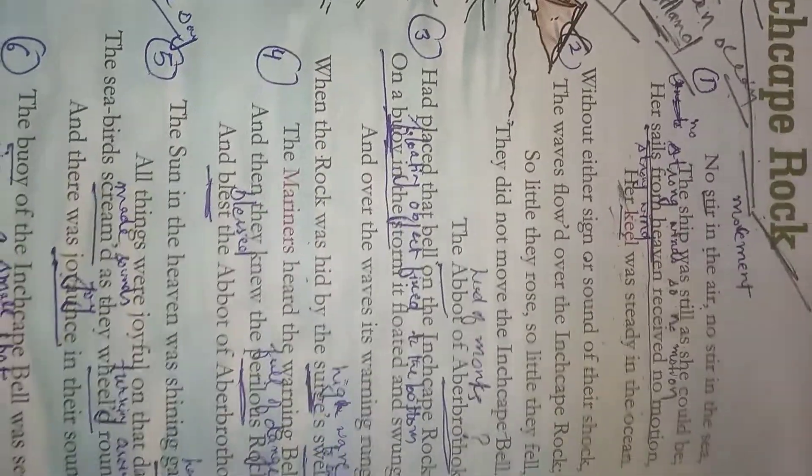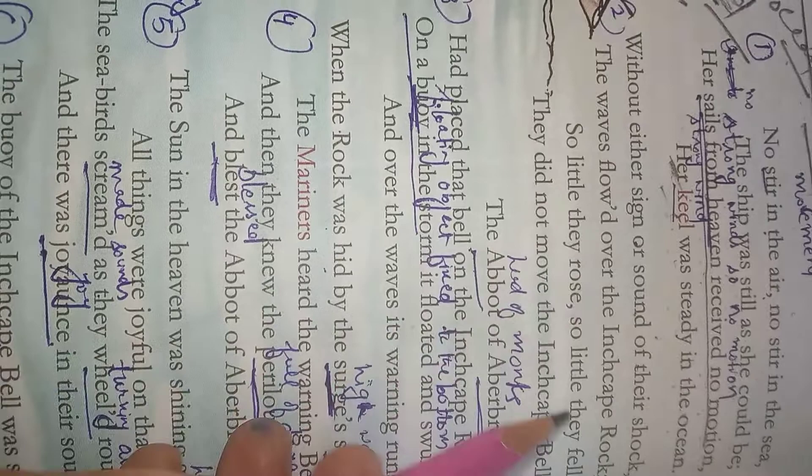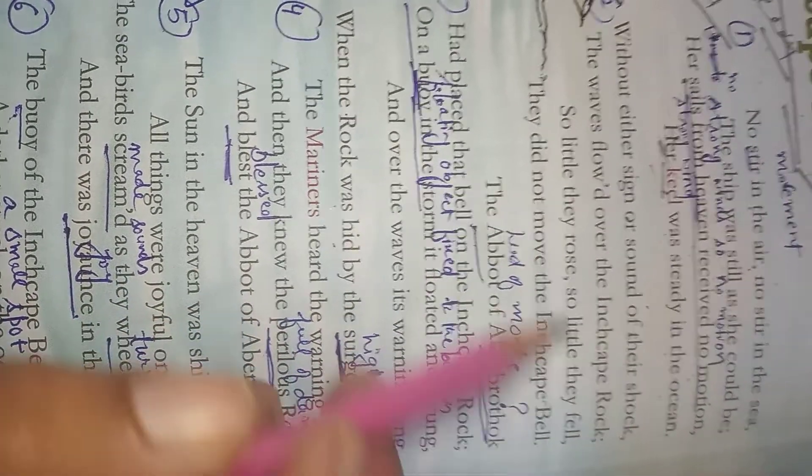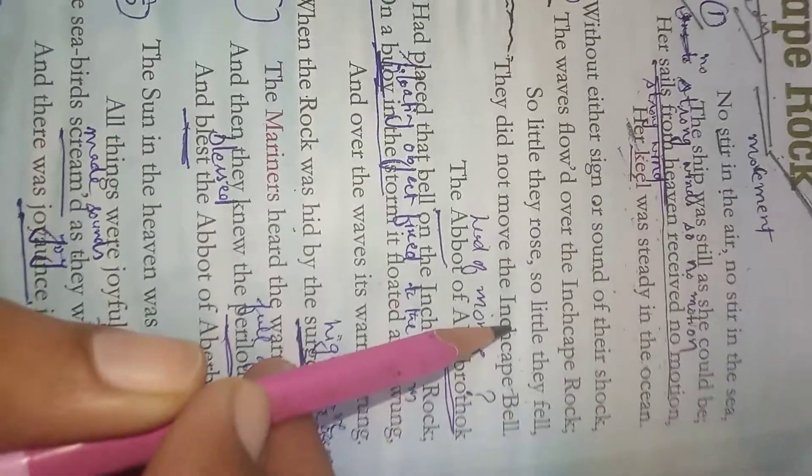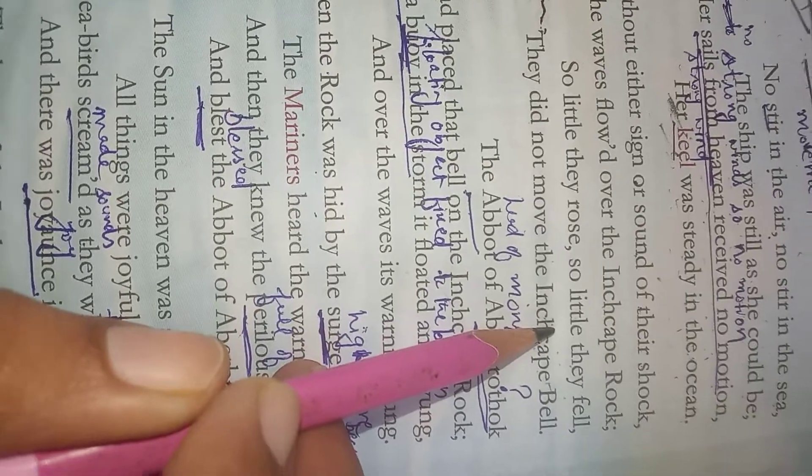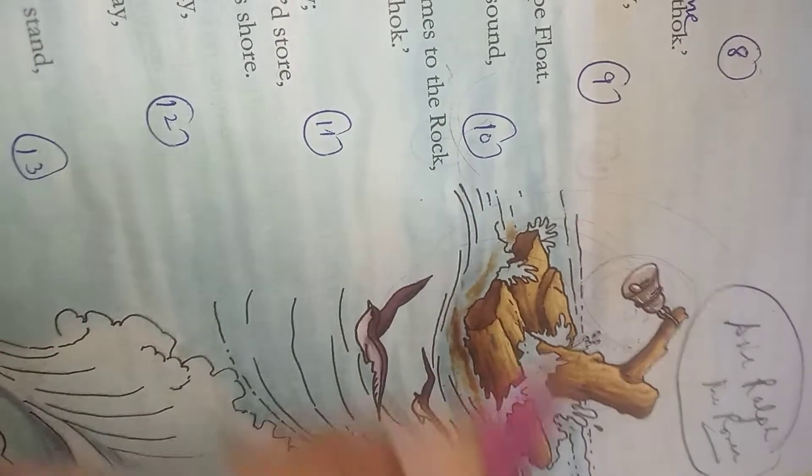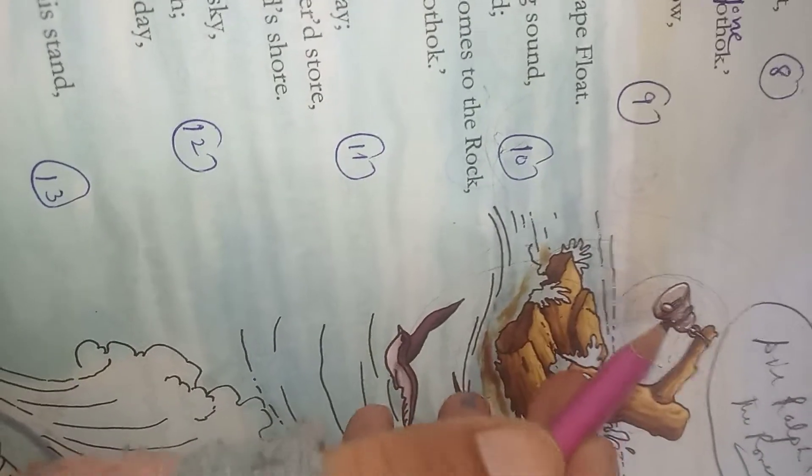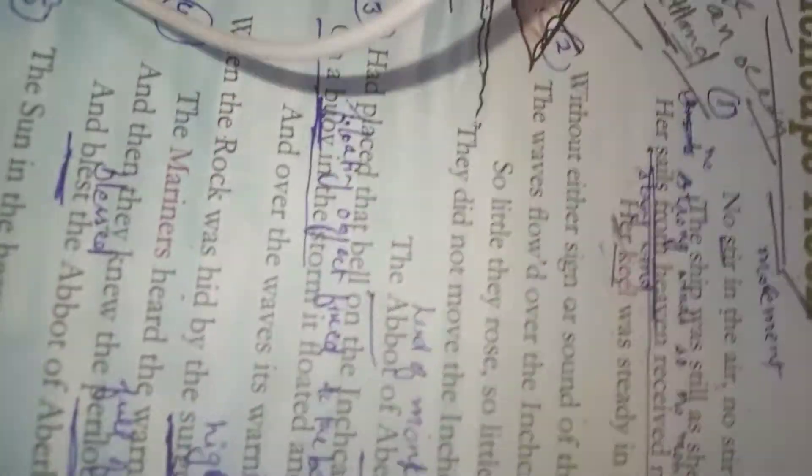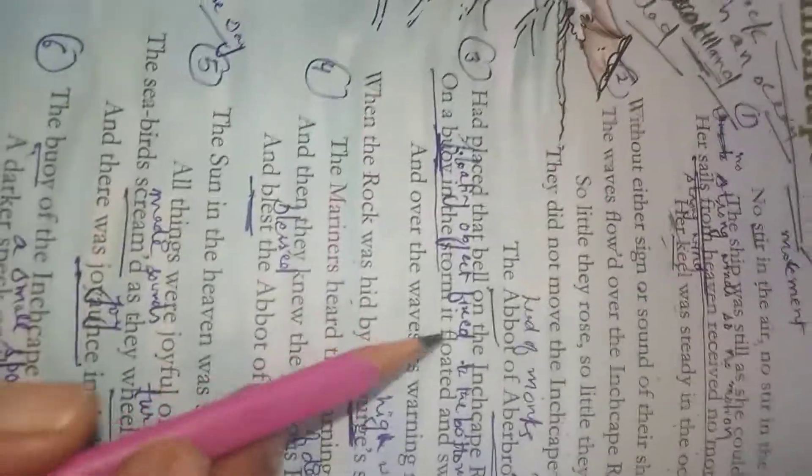Without either sign or sound of their shock, the waves flowed over the Inchcape Rock. So little they rose, so little they fell, they did not move the Inchcape bell. So as I told you, there was a bell hanging over Inchcape Rock. But now as the waves were slow, they were not striking against the bell. As there was no ocean, the moment of air was smooth, the moment of waves was also smooth. When the waves will strike with it, then only the bell will ring. So as the waves were moving smoothly, the bell was not ringing at all. There were no striking at all, so the bell did not ring.